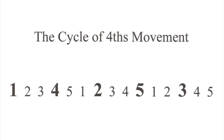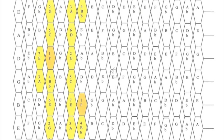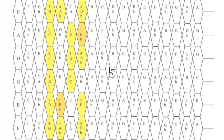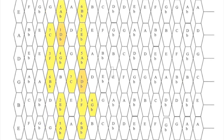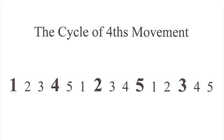Let's watch the foundational patterns change through the cycle of fourths again, starting with pattern three in the key of G. Remember to watch the highlighted note move across the strings. We just went eight keys through the cycle of fourths using the same five-pattern sequence.